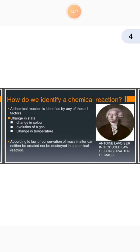How do we identify a chemical reaction? A chemical reaction is identified by any of these four factors: change in state, change in color, evolution of a gas, and change in temperature. After the chemical reaction, we can say that the chemical reaction is complete.